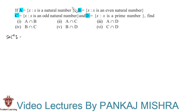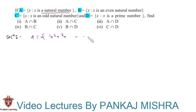First, let us write the given sets in roster form. A is equal to the set of x such that x is a natural number, so the elements of set A are 1, 2, 3, and so on. B is equal to the set of x such that x is an even natural number, so the elements of set B are 2, 4, 6, 8, and so on.